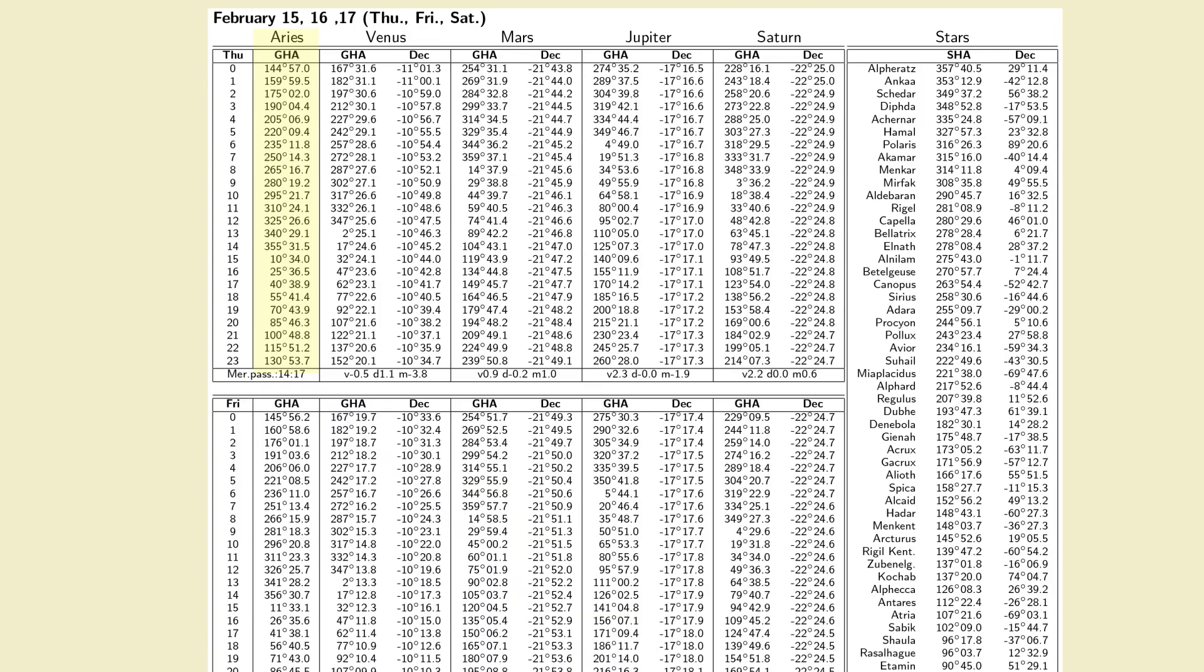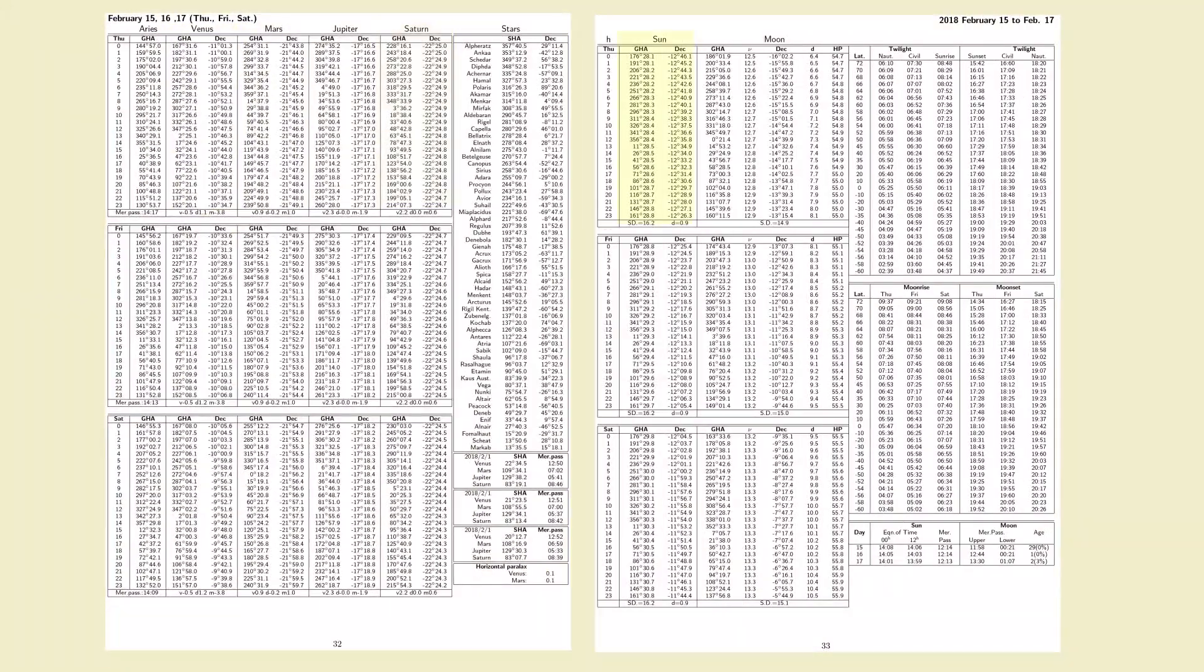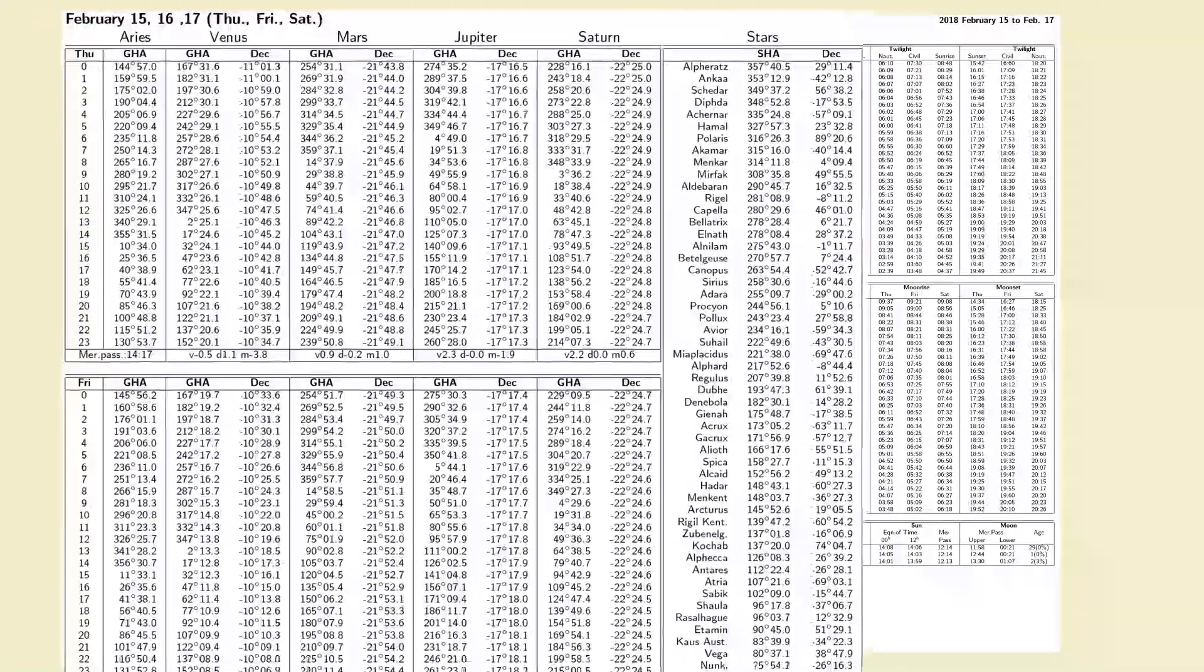Notice for Aries, Venus, Mars, Jupiter, Saturn, the Sun and the Moon, we're given tables for the Greenwich Hour Angle, or GHA.